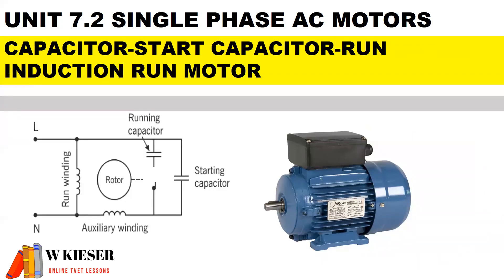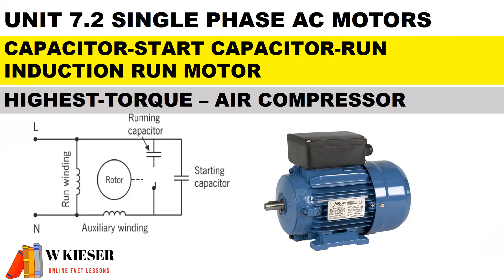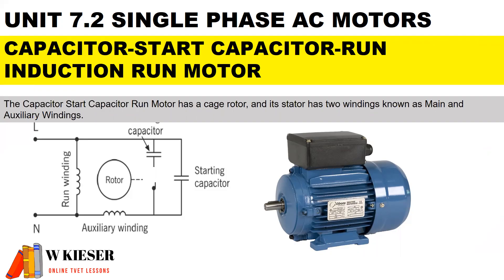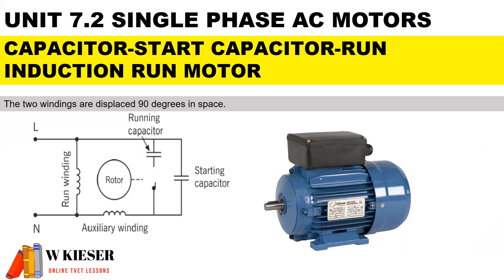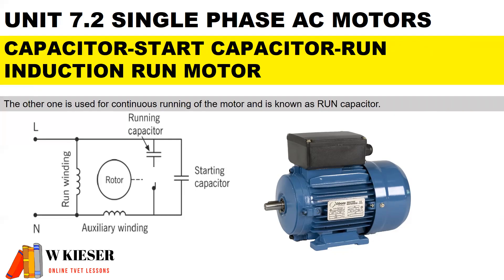Here we have the capacitor start capacitor run induction motor, and it's important to note that there are two capacitors. It has the highest torque, and a good application is air compressors or refrigeration. This motor has a cage rotor, and its stator has two windings, known as the main and auxiliary windings. The two windings are displaced 90 degrees in space. One capacitor is used at the time of starting and is known as the start capacitor. The other one is used for continuous running of the motor and is known as the run capacitor.